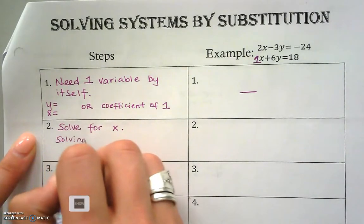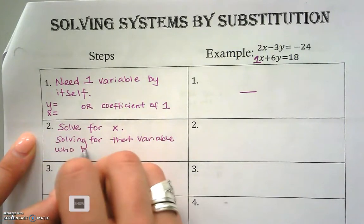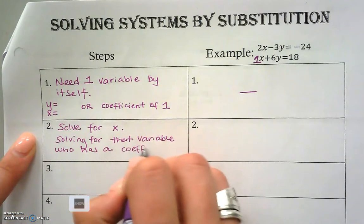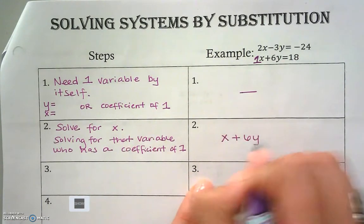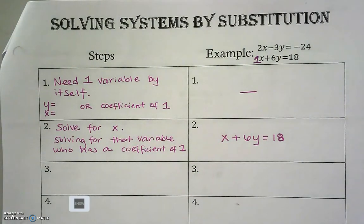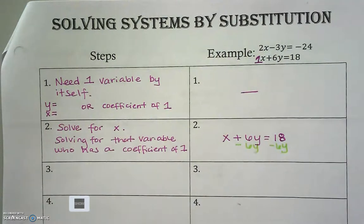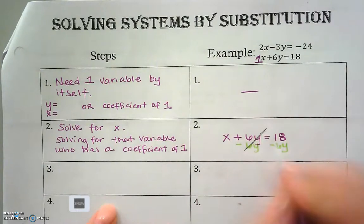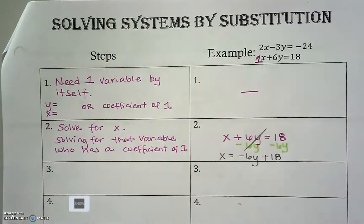That is going to be the equation that we're going to isolate, so we're going to solve for x. I'm going to rewrite that equation: x plus 6y equals 18. If I want to solve for x, I subtract 6y from both sides of the equation. That eliminates the y's, and I get x equals negative 6y plus 18. I have solved for x — I have isolated one variable.